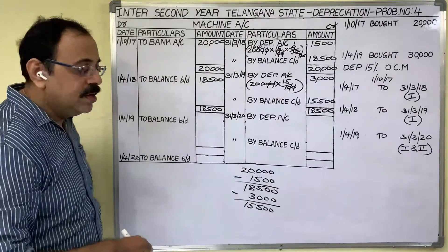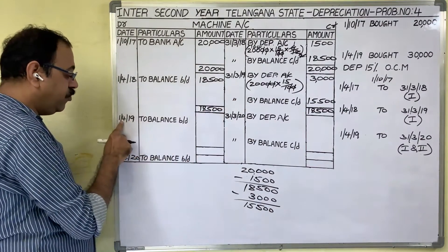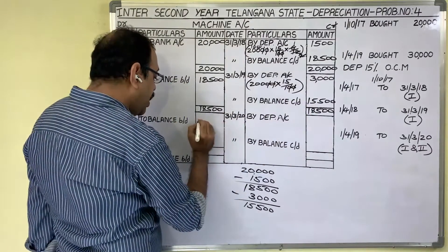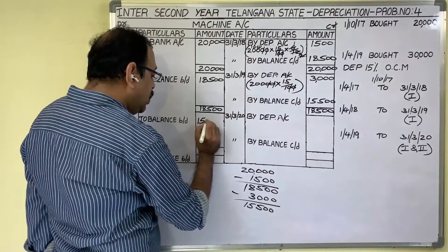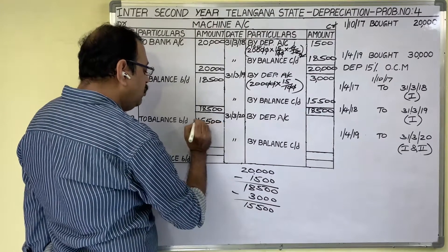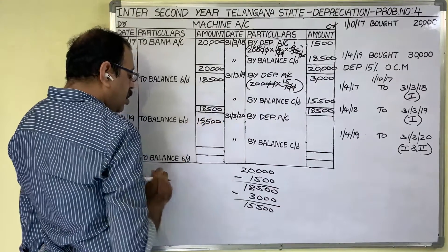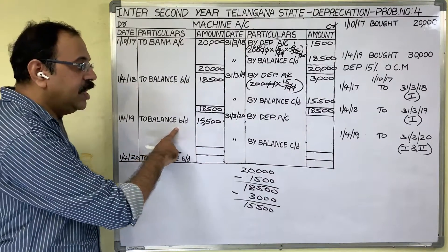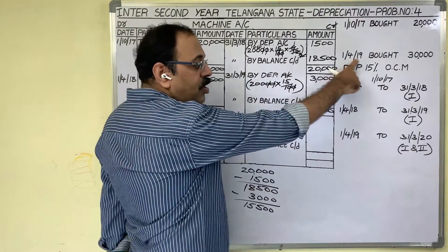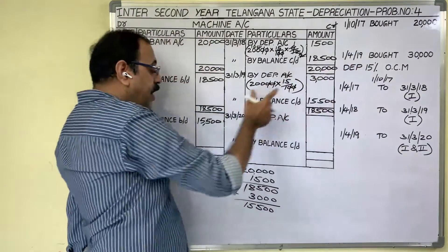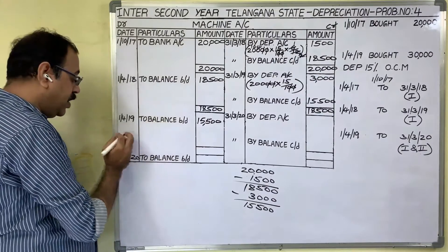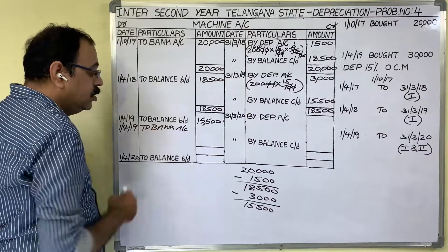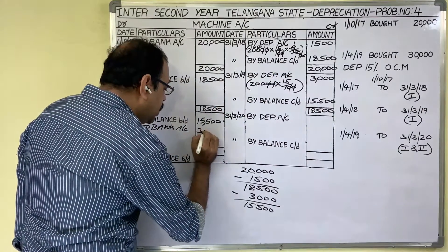Now come to the third year. The next date is 1st April 2019. Balance brought down: 15,500. This is the opening balance of the first machine. On the starting date of the third year, they purchased another asset. When we purchase any asset, on the debit side we should write that — write down the purchasing date, to bank. Second machine cost is 30,000 rupees.